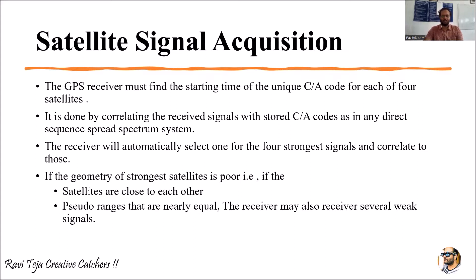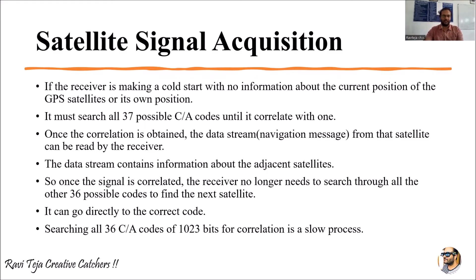If the geometry of the strongest satellite is poor, the receiver during its start-up makes a cold start, meaning it cannot establish a good signal strength. If the GPS receiver cannot establish a good signal strength, we consider it a cold start.